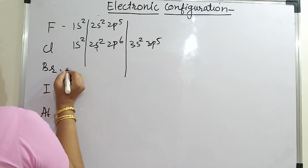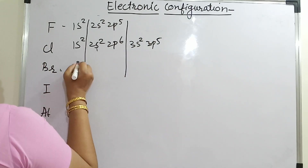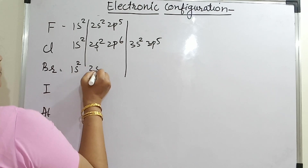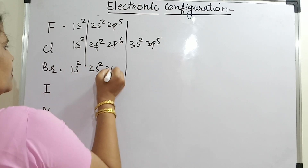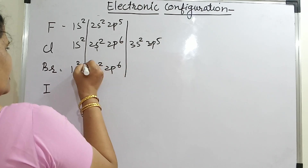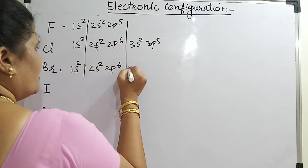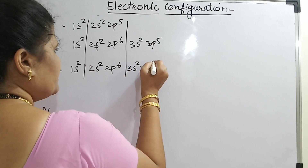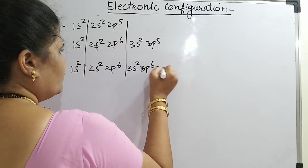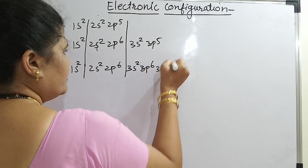Come to bromine: 1s2, 2s2, 2p6, then 3s2, 3p6, 3d10.